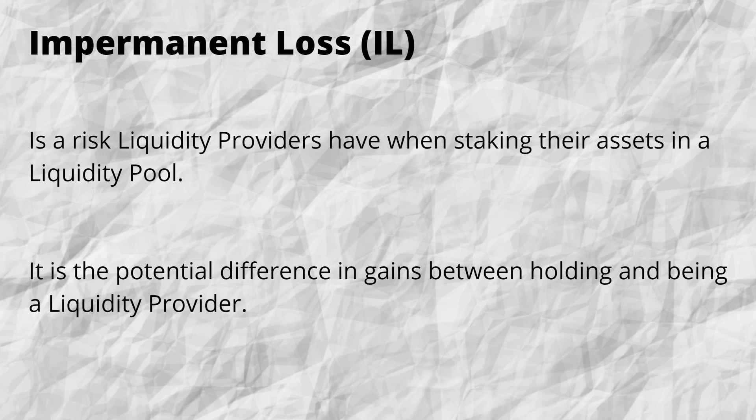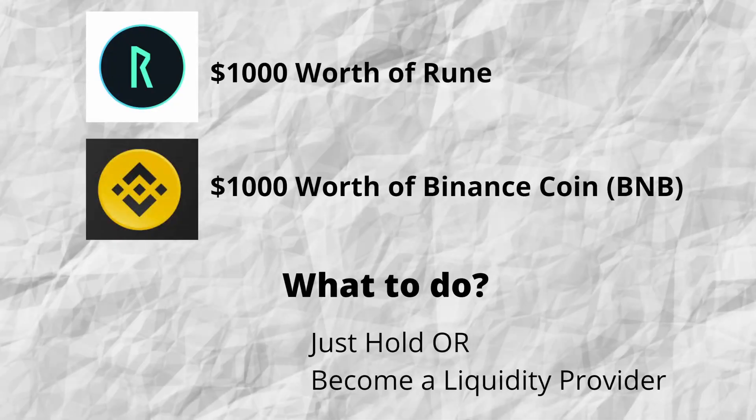It's hard to understand and hard to explain. So say I have two assets, Rune and BNB, about $1,000 each — so $2,000 worth of assets. I have a choice: I can either hold the assets in my wallet and wait for the price to go up, or I can put them to work and become a liquidity provider by staking them into a liquidity pool, say in BEPSWAP.